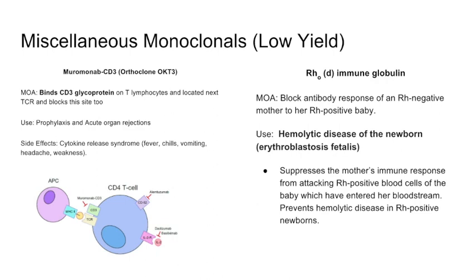Muromonab was actually the first monoclonal antibody ever created. It binds to the CD3 glycoprotein on T cells. Since CD3 is always near the T cell receptor (TCR), the large monoclonal antibody sterically blocks the TCR from functioning. It can be used for prophylaxis of acute organ rejection, but it's not used much anymore.